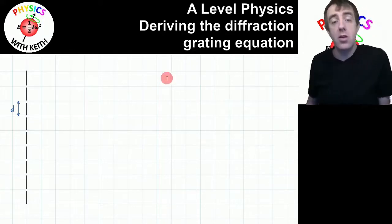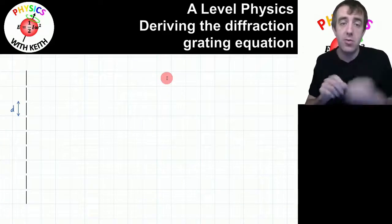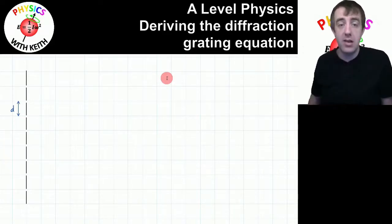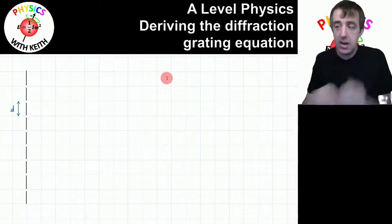If you watch the video that I recorded about deriving the equation for Young's double slit interference, in that video I showed that the path difference between rays that arrive in phase on the screen is an integer multiple of a wavelength. So we can use that same idea here.